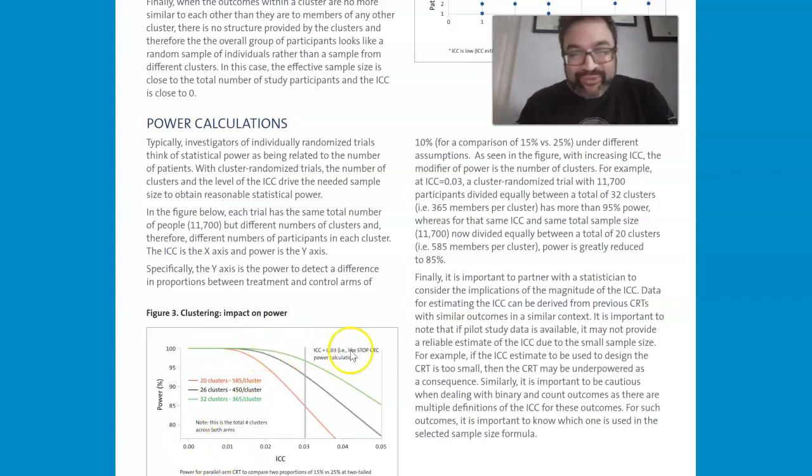So just try to repeat that a couple of times, because power calculations and power, that is the definition of power, and that is something that you need to know. So for a comparison of 15% versus 25% under different assumptions. So what is modifying the power distribution, the power percentage, is really the number of clusters.